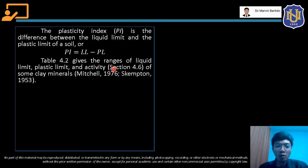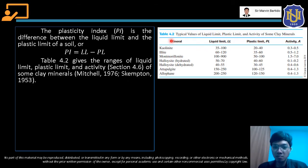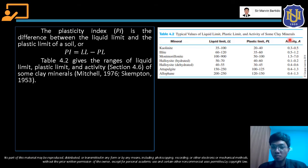Table 4.2 gives the ranges of liquid limit, plastic limit, and activity of some clay materials. Ito yung mga different minerals, and ito yung mga usual or typical values nung liquid limit nila, nung plastic limit, at saka nung activity. Yung activity is actually another characteristic ng soil — ito ay nasa course material natin, so merong discussion para dyan.